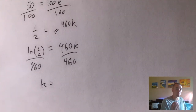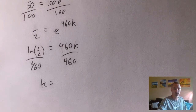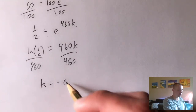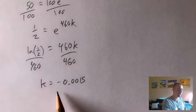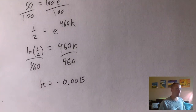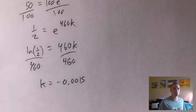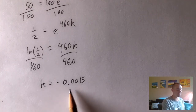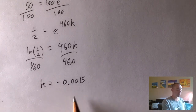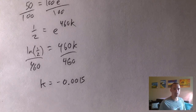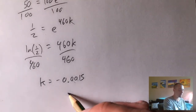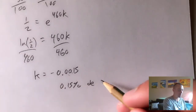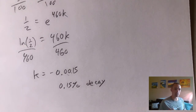Plugging that into a calculator gives us k ≈ −0.0015. Since k is negative, that aligns with the fact that it's a decay rate — if k is negative it's decay, if k is positive it's growth. That's really the only difference between an exponential growth rate and an exponential decay rate. So our decay rate is −0.0015, which expressed as a percentage is 0.15% decay rate. We can drop the negative sign when specifying it as a decay rate rather than a growth rate.